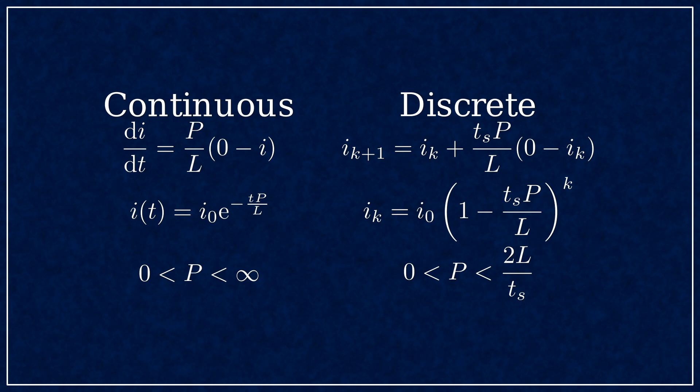In discrete time you have limitations for the gain, though the faster you sample the higher you can go with the gain.